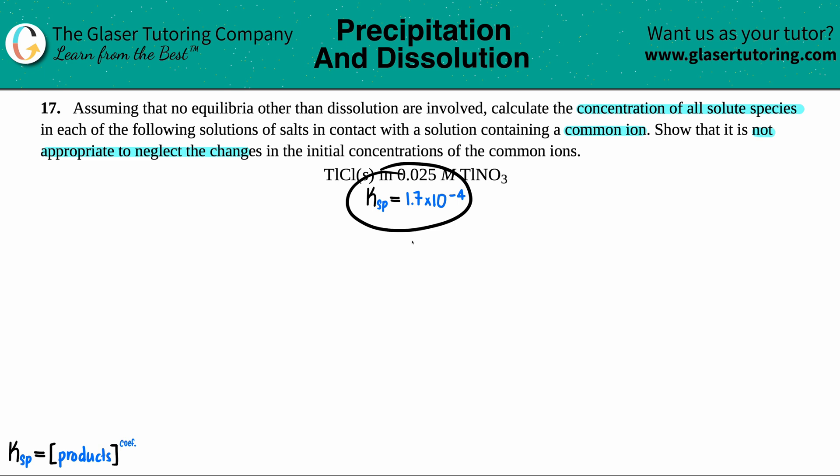For the compound being dissolved, it's always the solid. We have TlCl that has a solubility product Ksp of 1.7×10⁻⁴. We first have to write out the balanced equation that breaks this down. That's the whole part of this chapter.